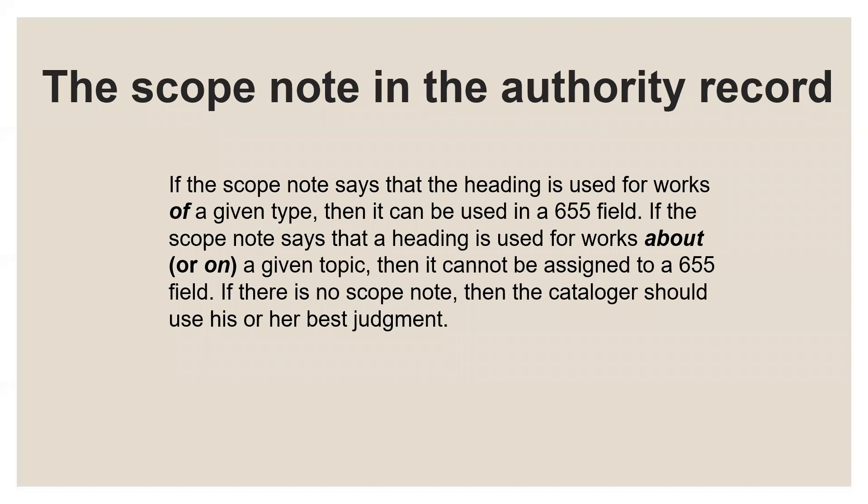Here's the scope note in the authority record. The scope note, found in MARC tag 680 of the authority record, says that the heading is used for works of a given type — then it can be used in MARC tag 655. If the scope note says that a heading is used for works about or on a given topic, then it cannot be assigned to a 655. This rule is taken directly from the FAQ on genre form headings from the Library of Congress, updated June 2011 — specifically question 35.